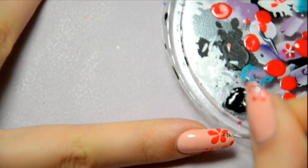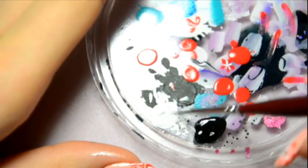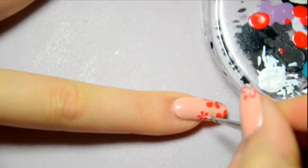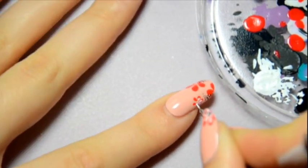Next, with a small detail brush, add some white nail polish to the petals to make the small dots. To make the small dots, just press on your brush.